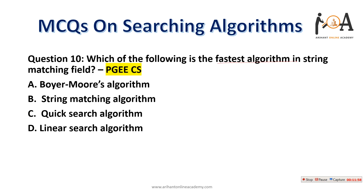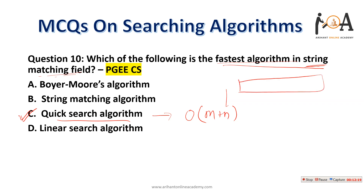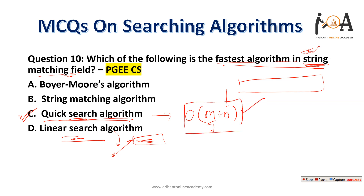Question ten: which is the fastest algorithm in the string matching field? Quick search algorithm is the fastest for string matching, with complexity O(m + n), where n is the total list length and m is the number of characters in the pattern string. Linear search is used to find a particular element in a list, whereas quick search is specifically fastest for string matching. Option C is the most correct answer.